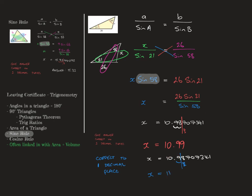Both answers are correct. When you finish a question like this, always look at the answer you got and make sure it fits with what you're doing. This side is 26, so 11 seems about correct. If you had an answer of 3,400, you'd know that doesn't fit. In this case 11 or 10.99 does seem correct. That's the sine rule — finding a missing side.